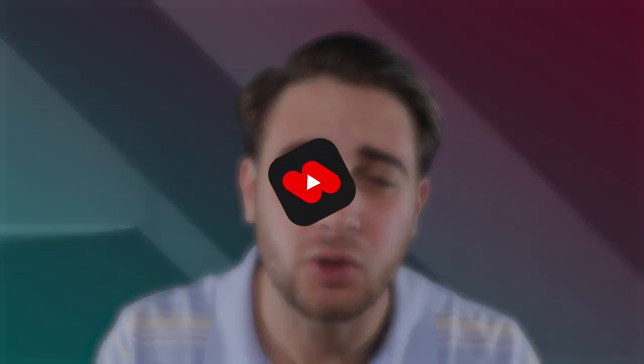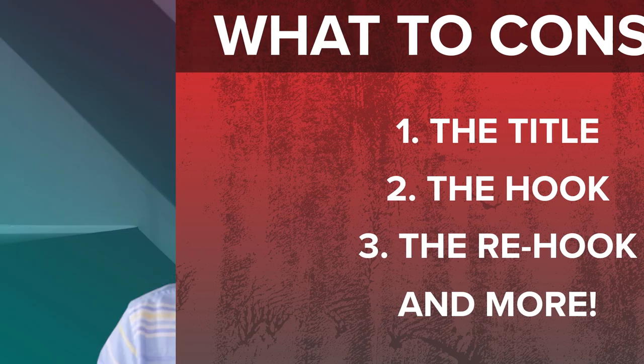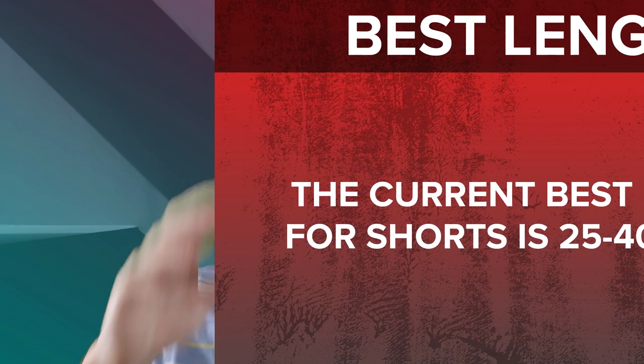Three of the most important things that every single one of you needs to reconsider when you're posting on YouTube Shorts: one, the title of your video; secondly, the hook of your video; third, the re-hook of your video, and a couple other secrets I'm going to share with you later. Most Shorts that people create are going to be 25 to 40 seconds long, because those are the best lengths right now on YouTube Shorts to get a ton of views.